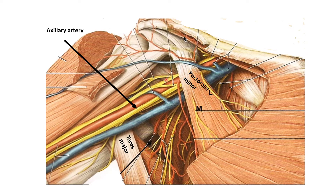The axillary artery has important relations in the axilla. Medial to it runs the axillary vein, and it is surrounded by the cords and branches of the brachial plexus, shown in yellow. All these structures form a neurovascular bundle enclosed by the axillary sheath, which is thinner along the axillary vein but thicker where it encloses the axillary artery and the cords and branches of the brachial plexus.